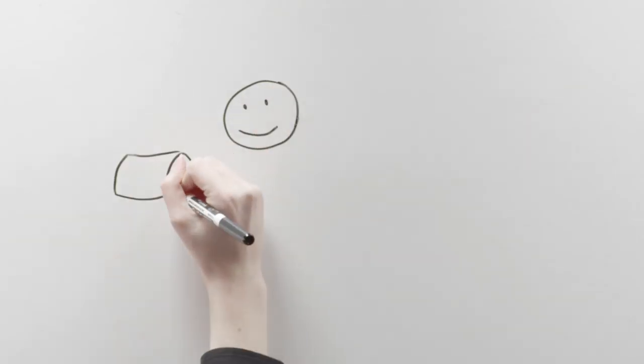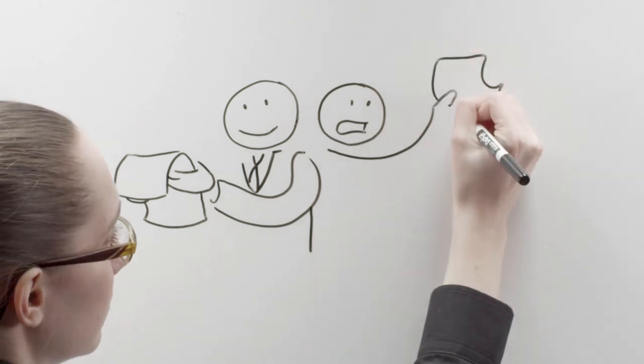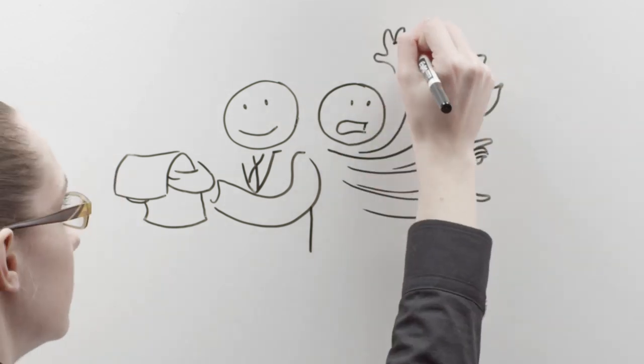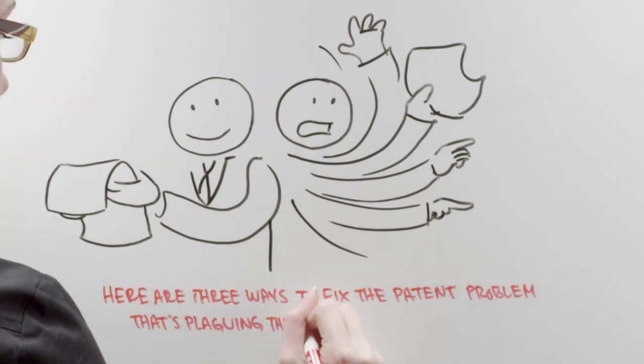Today, patents are sold in bulk to lawyers who, instead of capitalizing on the invention, make their money by suing anyone and everyone they can claim is infringing on their patent. Here are three ways to fix the patent problem that's plaguing the investors of America.